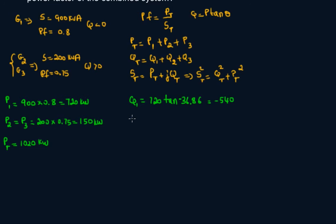Q2 equals Q3. Here it's going to be positive. So P is 150, tangent of inverse angle of 0.75, that's 41.4, and this gives me 132. So Qt, total reactive power here, is given as minus 276 kVAR.